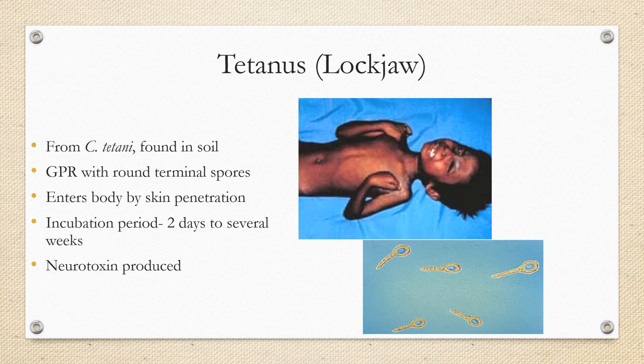Tetanus, or lockjaw, is caused by Clostridium tetani, found in the soil as normal environmental flora. It's a gram-positive rod with round terminal spores that enters the body by skin penetration, transmitted by puncture wounds, nails, or traumatic body penetrations such as gunshots or splinters. The incubation period is two days to several weeks. It produces a neurotoxin — the second most potent known to man — which travels from the wound to the brain via the bloodstream. Symptoms include locked jaw, stiff neck, arm stiffness, and convulsions. Treatment is with antitoxin.